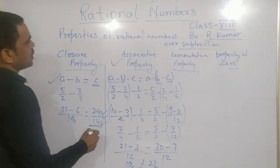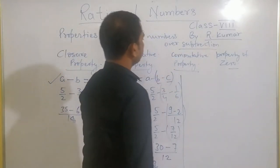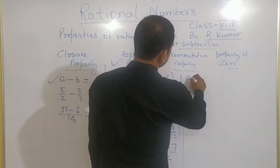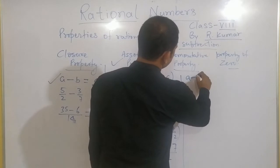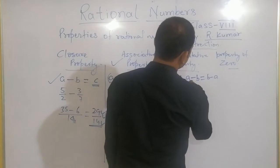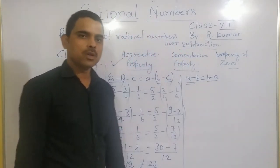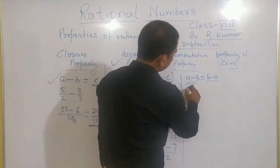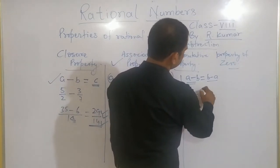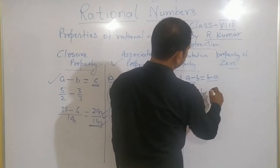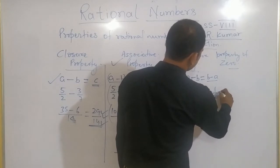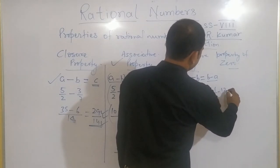Now next property we will check for this also, commutative property. If I subtract A minus B, means I do this, or B minus A. I will check for these two, whether coming the same or not. 12 by 5 minus 1 by 10. I do this, or I change the order and we will check whether coming the same result or not. 12 by 5.